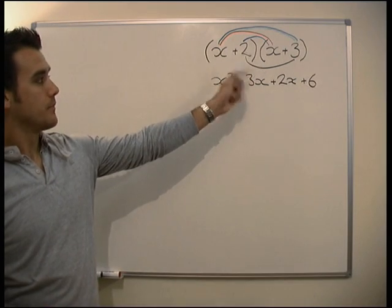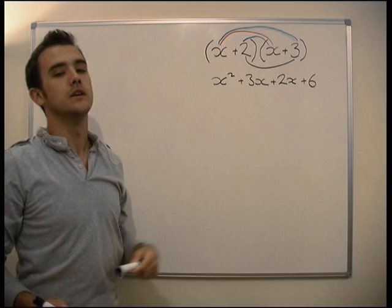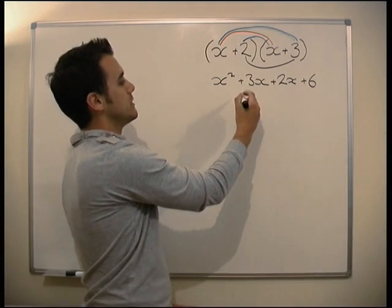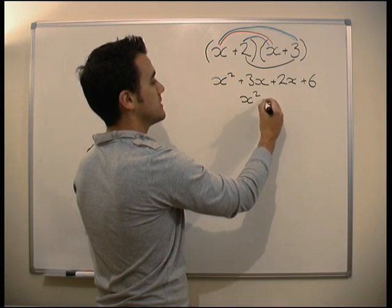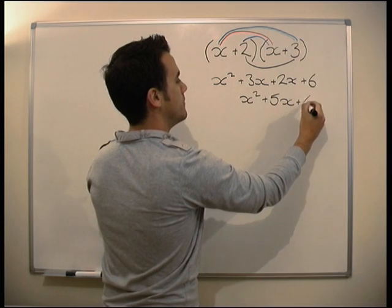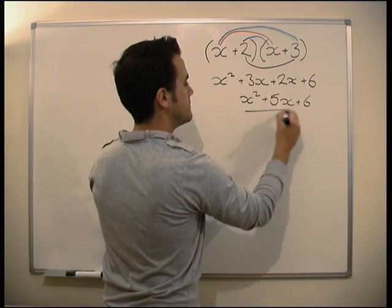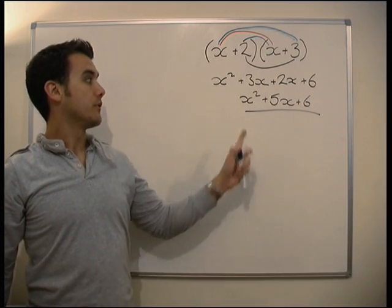Just make sure everything's times with everything else. By drawing these lines, we make sure we've definitely done all the steps. So now what we've got to do is simplify. 3x plus 2x is 5x, and then plus 6.